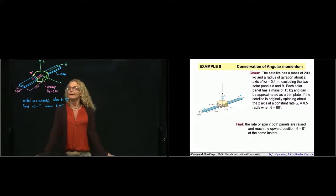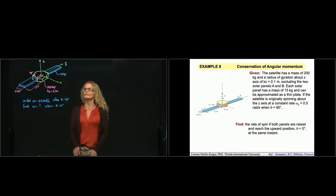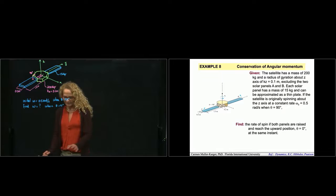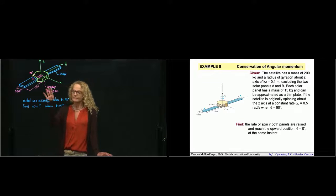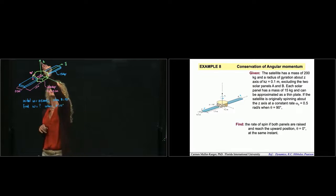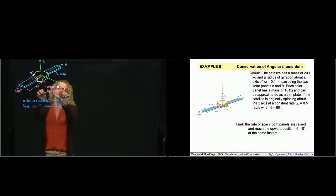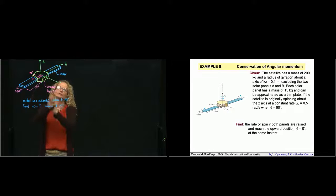This is problem number 8 of chapter 19. We are studying conservation of angular momentum, so let's look at this satellite problem. The satellite has a mass of 200 kilograms, and the radius of gyration about axis C is 0.1 meters, excluding the solar panels A and B. The radius of gyration is given for only the body of the satellite, which is the yellow part.